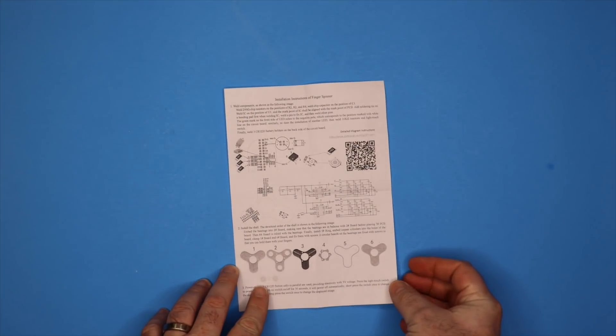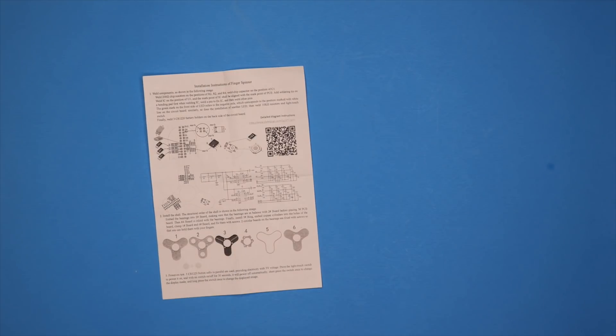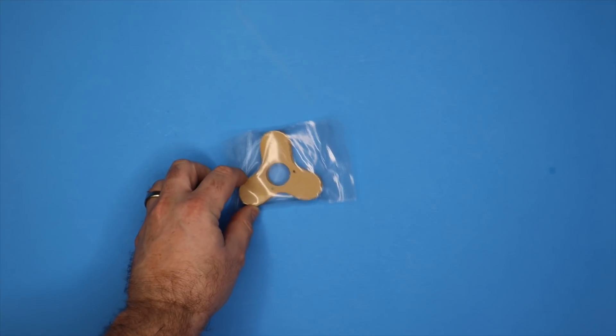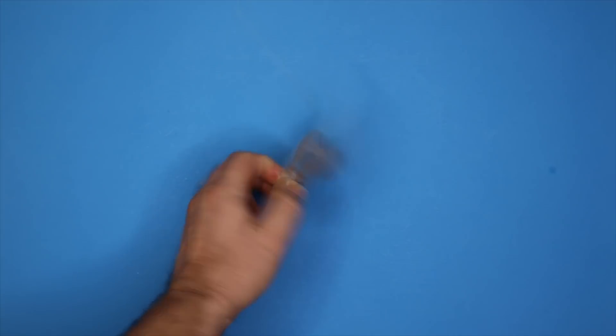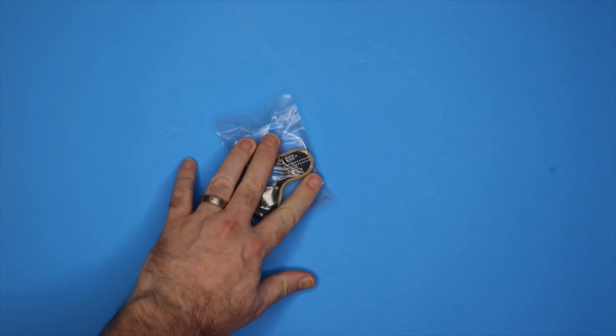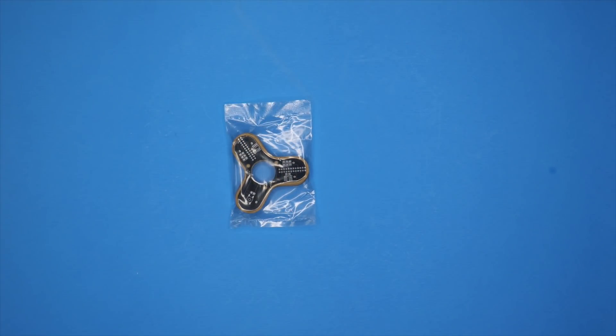Inside the fidget spinner bag there are some instructions. There is probably a better version of these instructions in the box guide that might be a little easier to follow than the ones on paper. And then there are several pieces of cut acrylic that make up the body of the fidget spinner and a PCB that supports the circuitry.